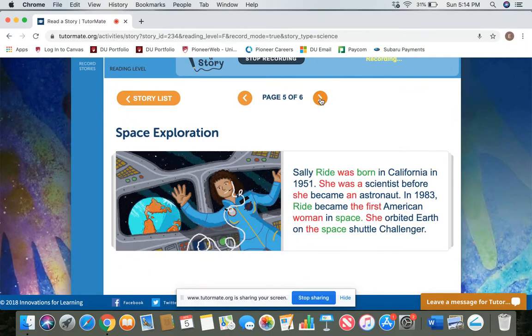Sally Ride was born in California in 1951. She was a scientist before she became an astronaut. In 1983, Ride became the first American woman in space. She orbited the Earth on the space shuttle Challenger.